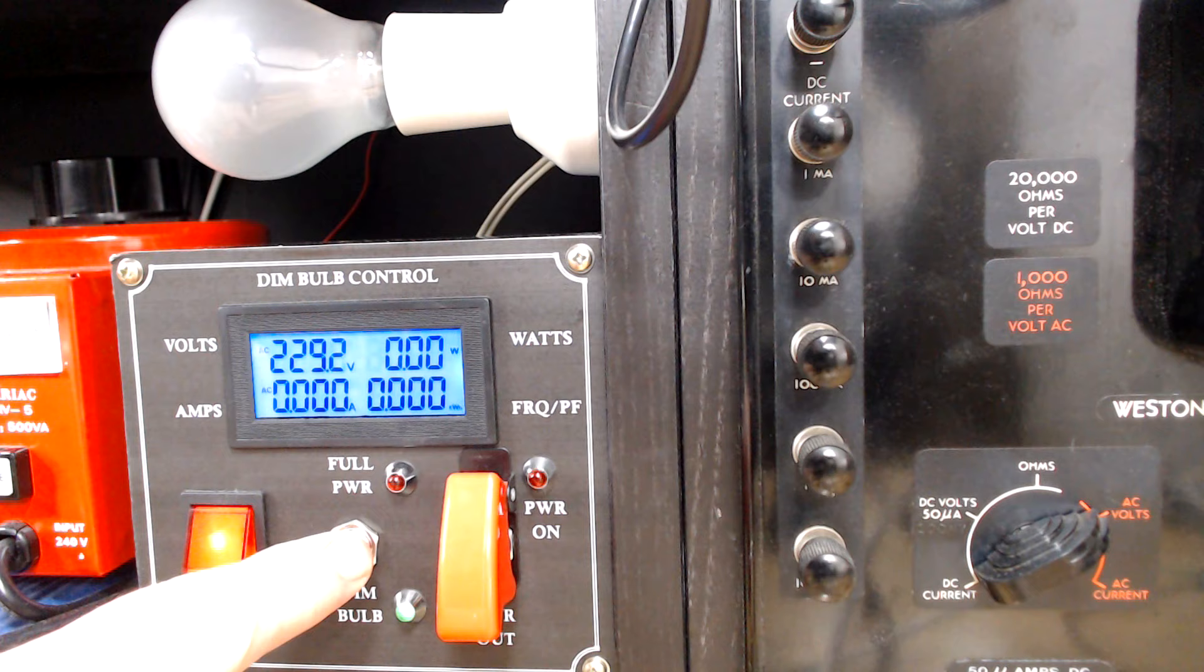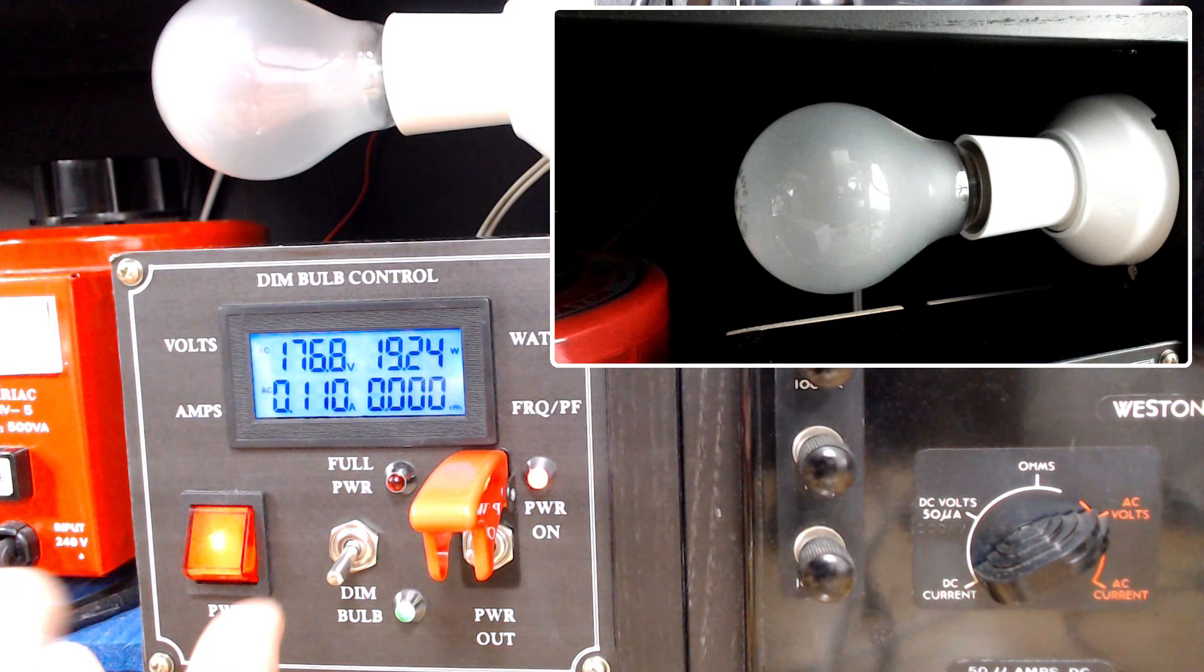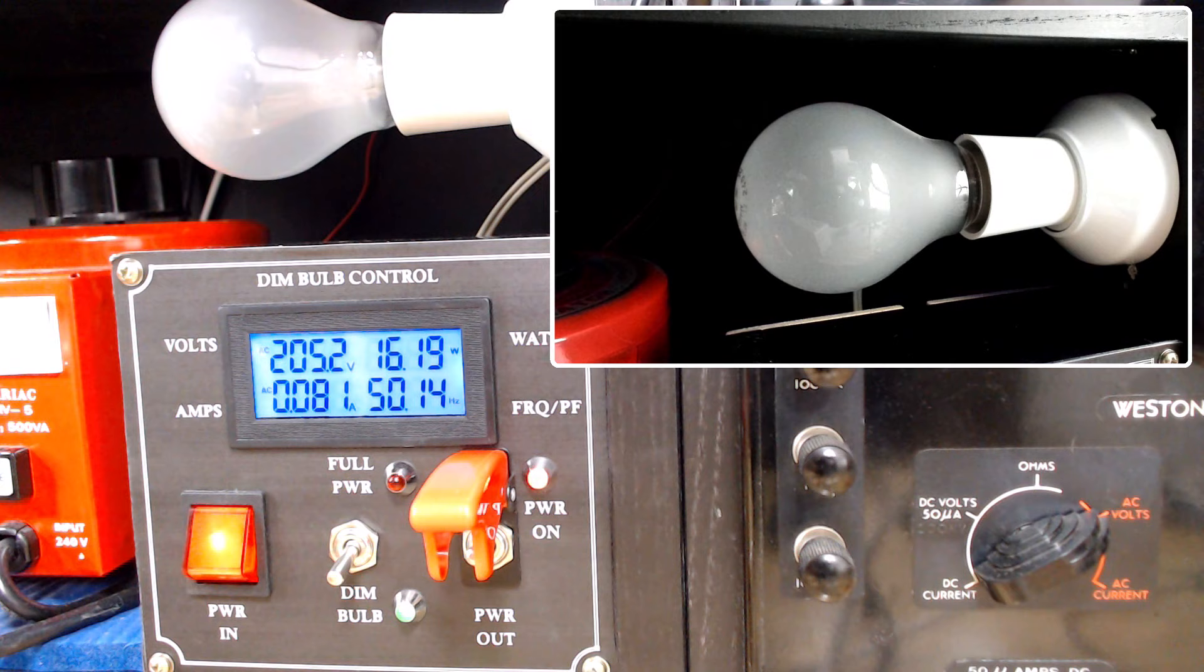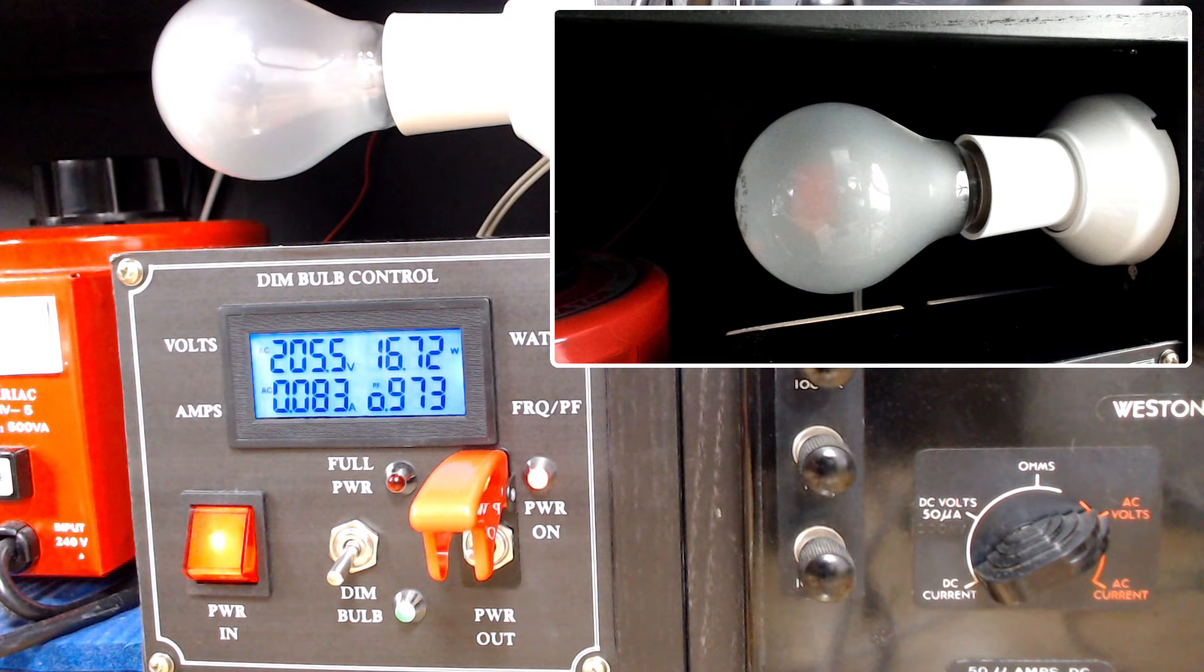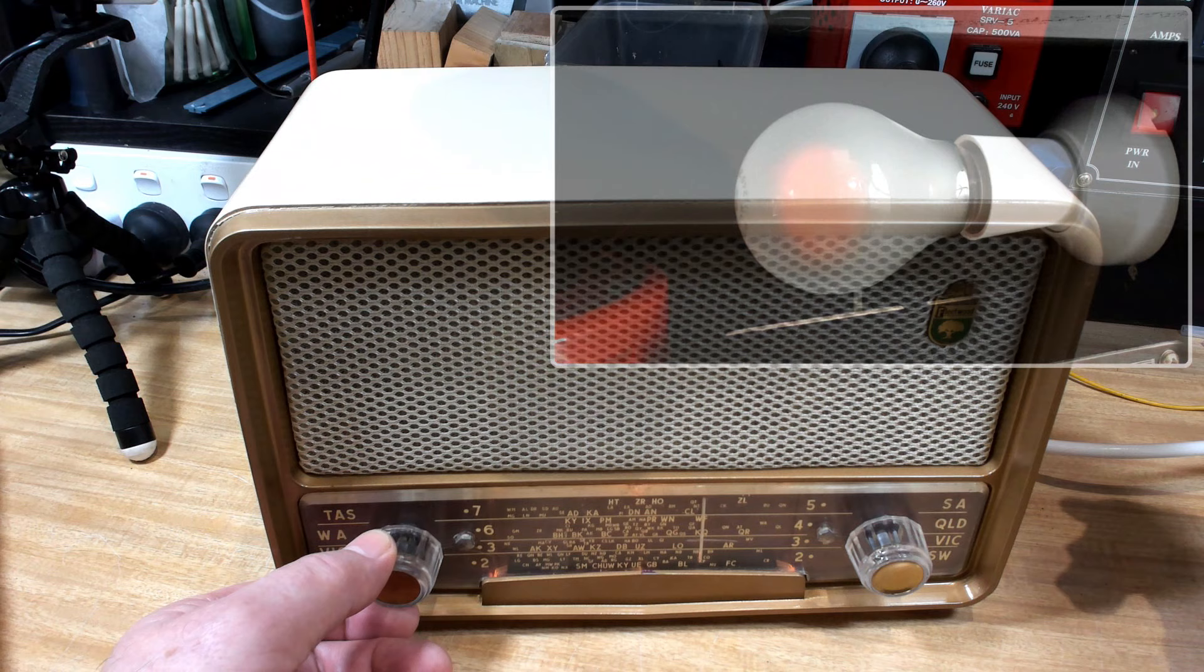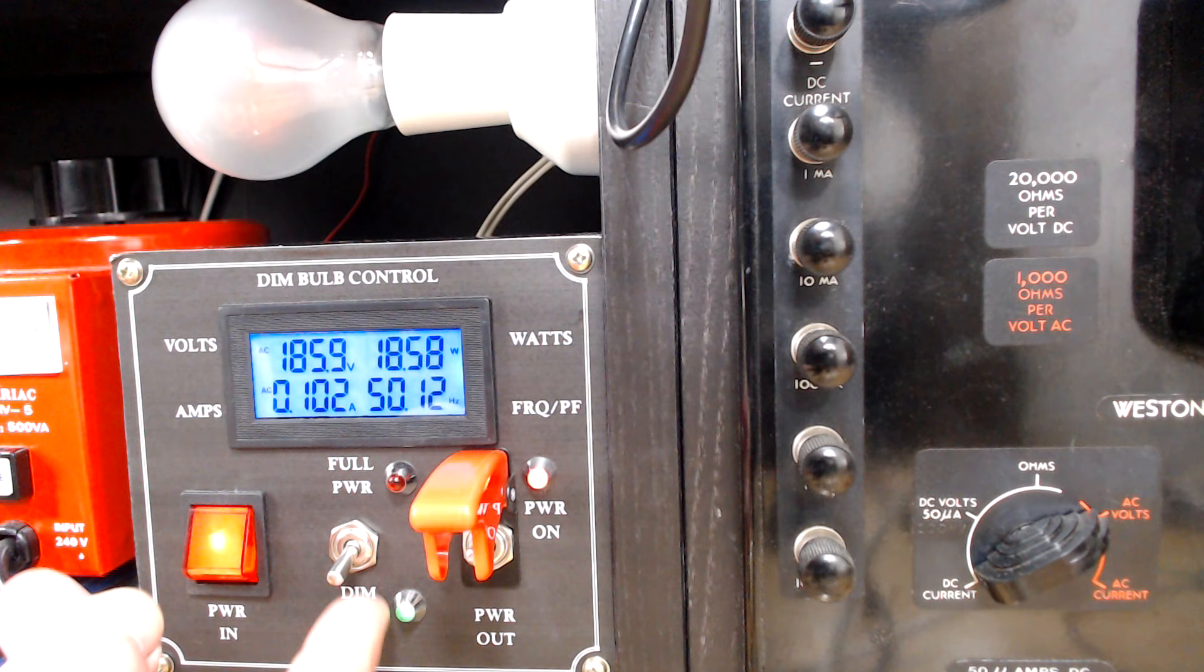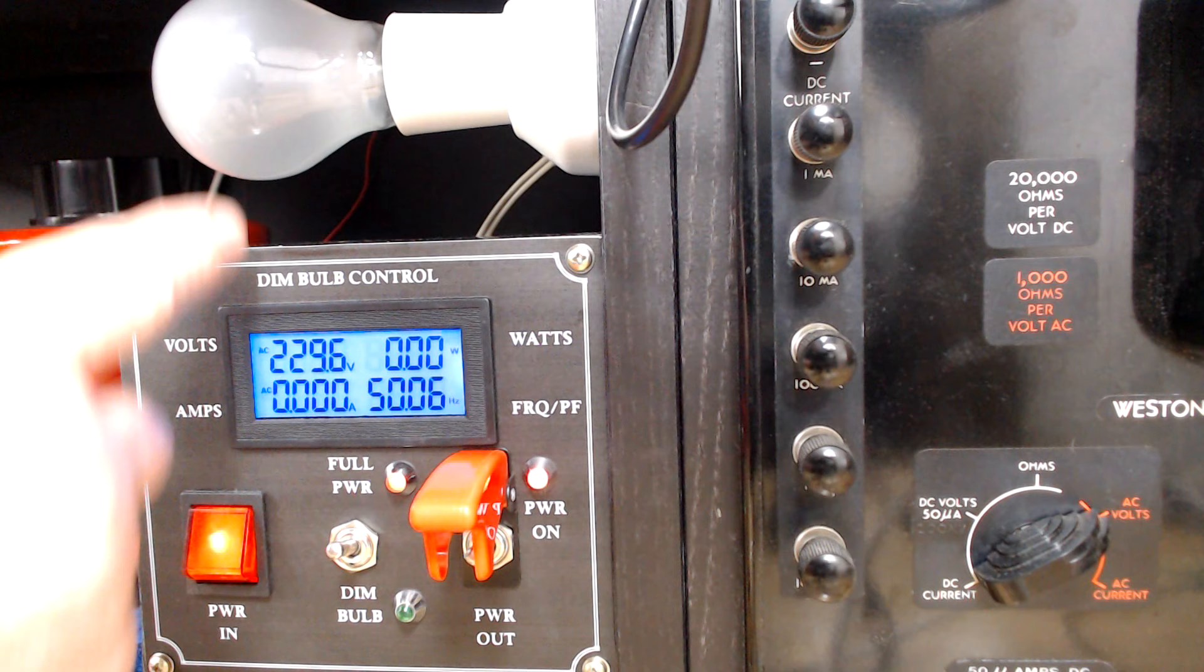I've got it on dim bulb. I'll switch it on. The light will go bright, dim off, and if we wait till it heats up, it'll start to come on bright again. I want to say bright. It's not bright. It's bright-ish. And there it is. And when we're happy with what's going on, I can just go straight to full power.